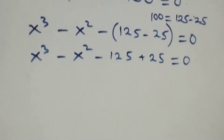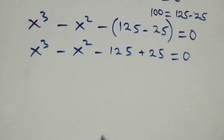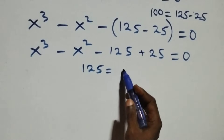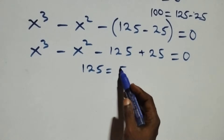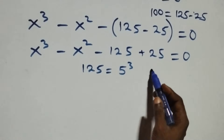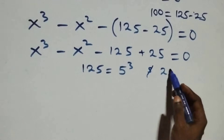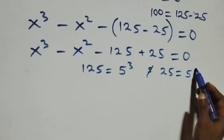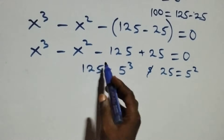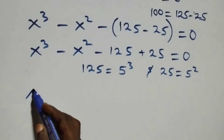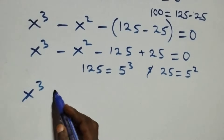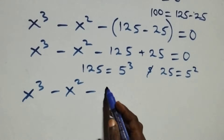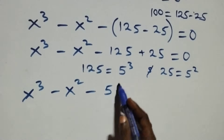In the next step, 125 is the same as 5 times 5 times 5, which is 5 raised to the power 3, and also 25 is 5 times 5, which is 5 raised to the power 2. So this equation becomes x raised to the power 3 minus x raised to the power 2, then minus 5 raised to the power 3 plus 5 raised to the power 2.